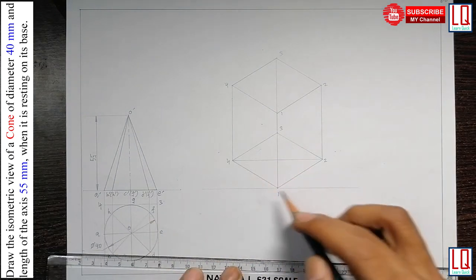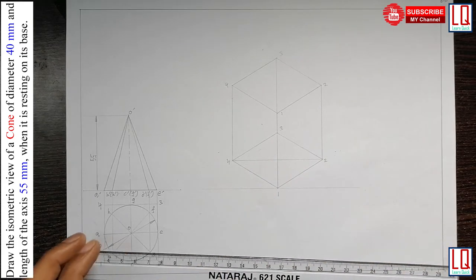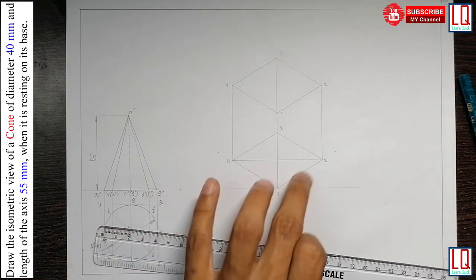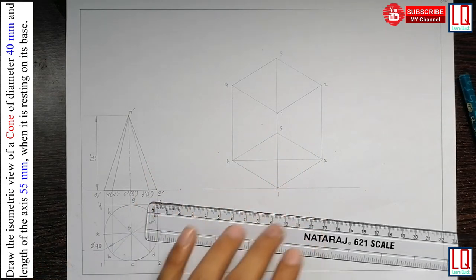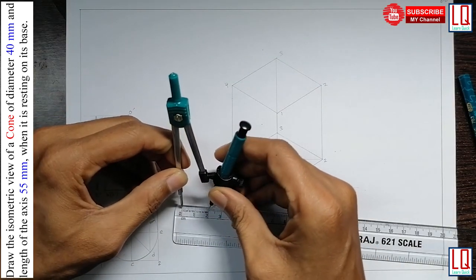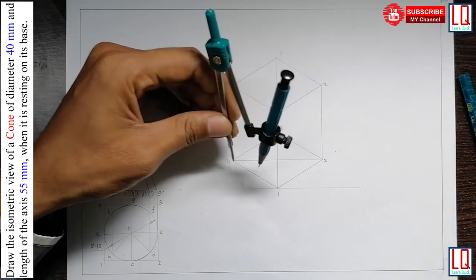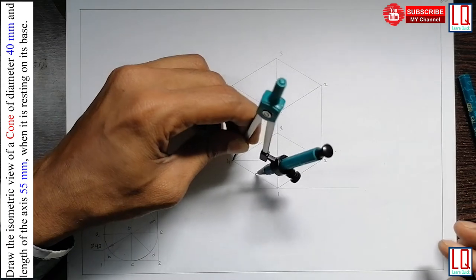Since this circle is going to be visible as an ellipse here, we are going to follow this method to complete the drawing and we need to find the midpoints of all these four sides.